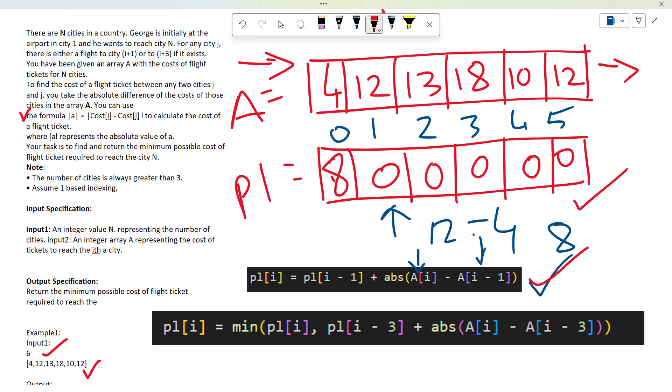We have a second formula because we should check what will happen if we move three cities at a time. The first one fills the array with single steps, but the second formula discounts the previous cost of the city and compares what will happen if we move three cities backward.